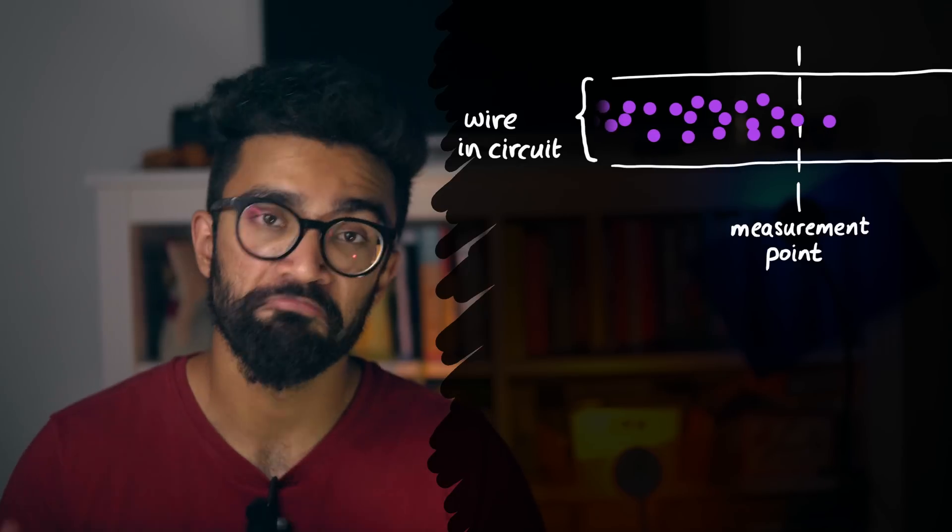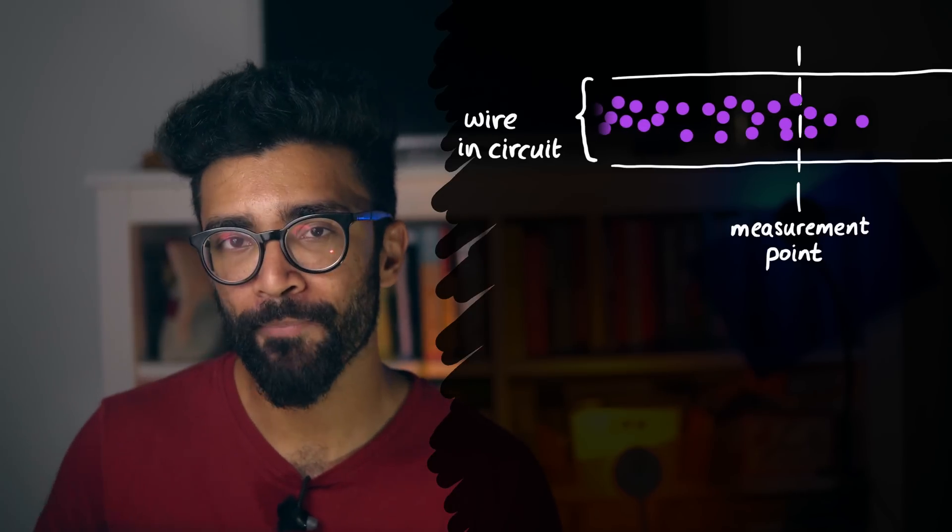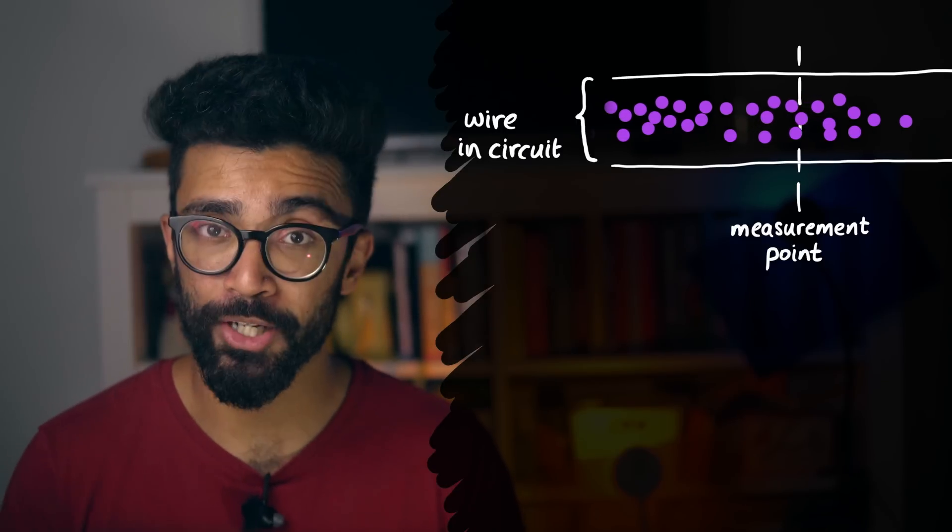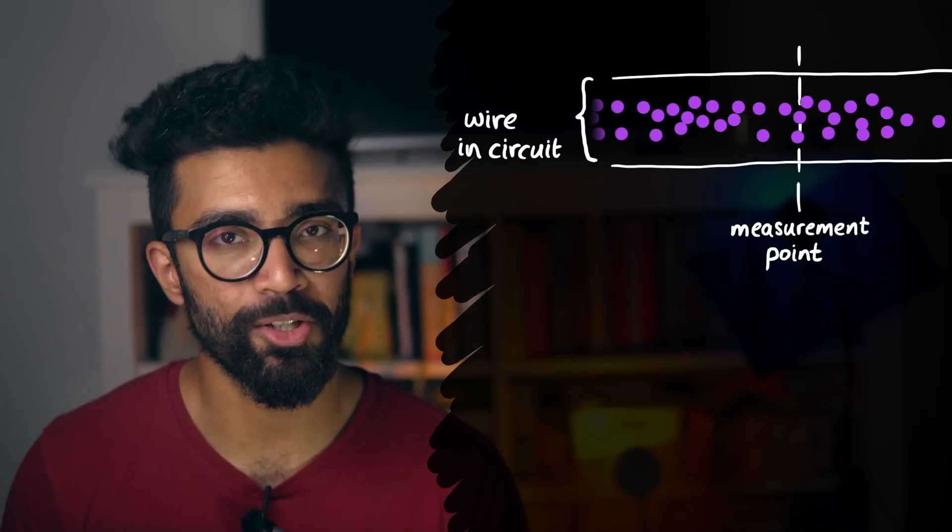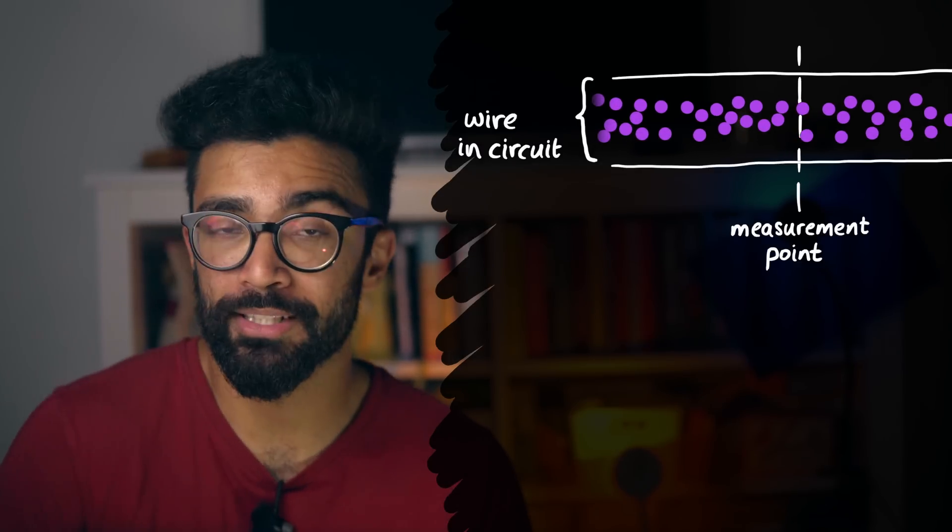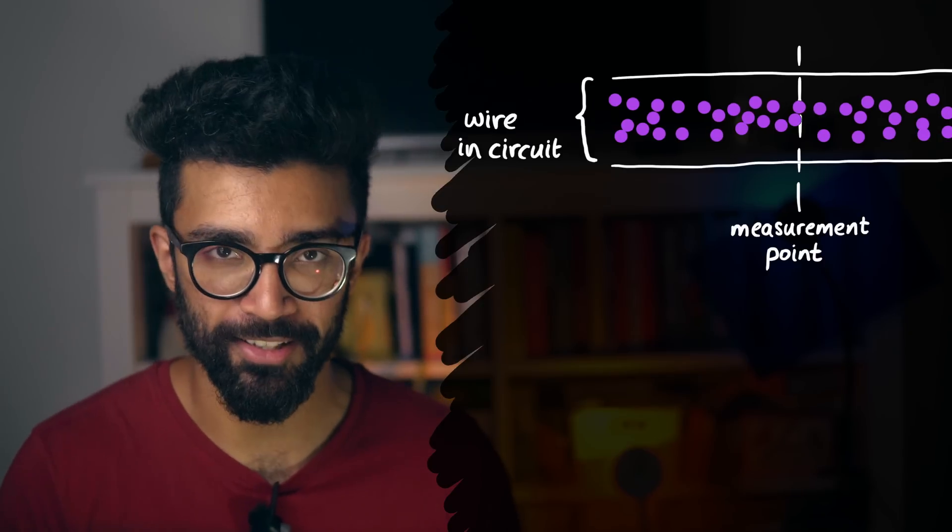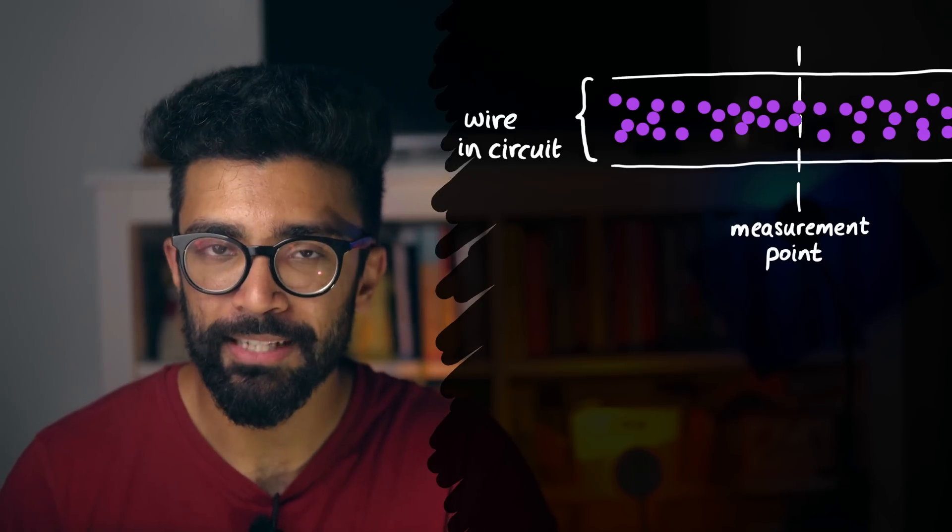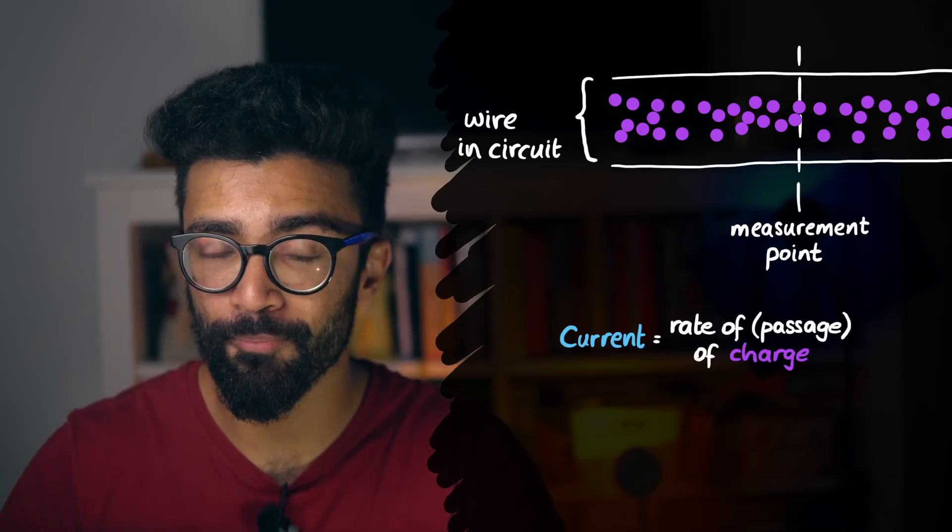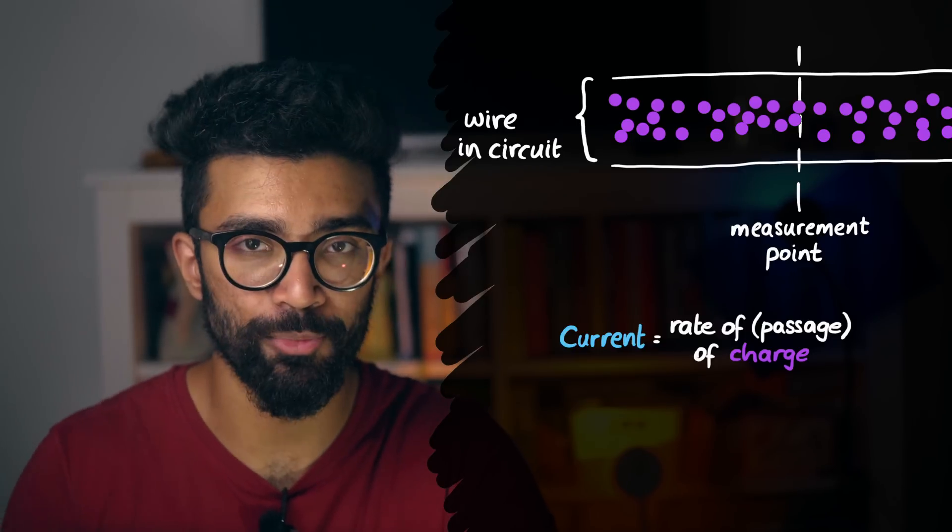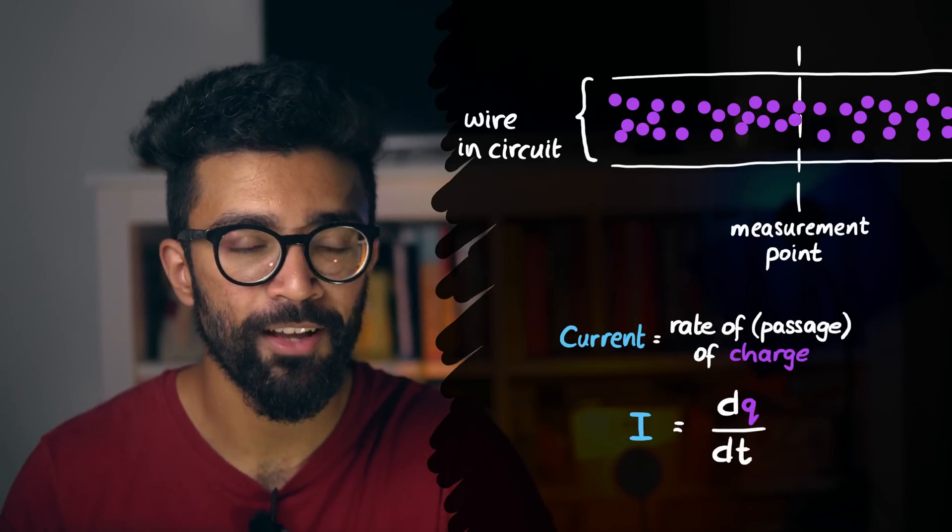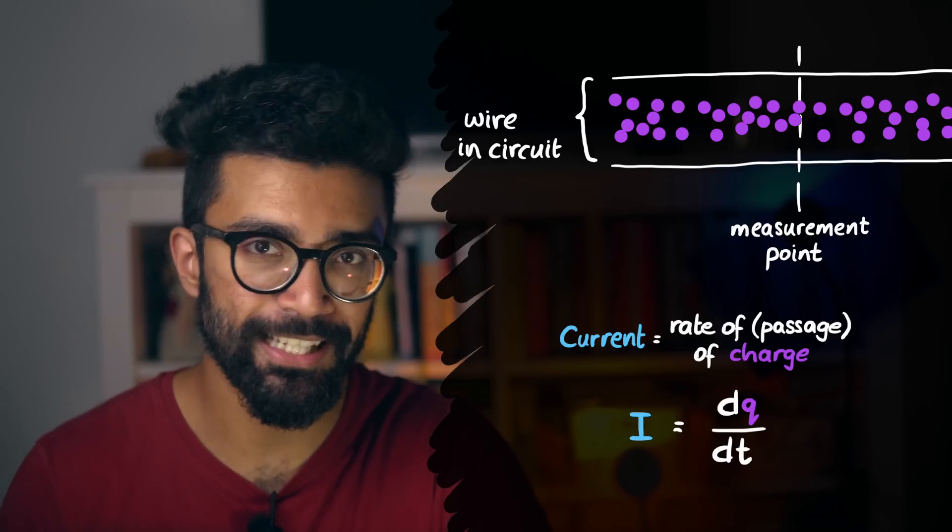We can essentially count the number of electrons passing a point per unit time, and calculate the total amount of charge passing this point per unit time by multiplying this number by the charge on one electron. This total charge passing a point per unit time is basically the current that we have at this point in the circuit. What this means then is that current is simply the rate of change of charge with respect to time, or how quickly charge moves per unit time. This can be written as dq by dt, where q is charge and t is time.